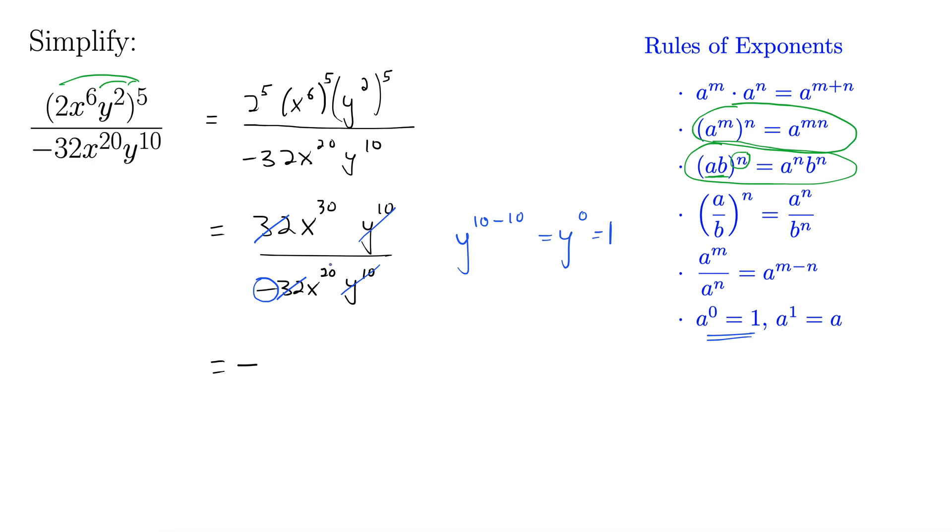What we're left with is just these x terms here. And now I will use this other rule of exponents here. So we have the same base, but we're dividing. So we're using this rule down here. That gives us x to the 30 minus 20. Alright, so final answer, negative x to the 10th.